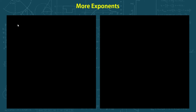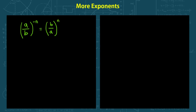Now let's go into some more advanced exponent rules. The first rule says that a fraction a over b, raised to the power of negative n, is equal to the flipped fraction b over a, with the exponent becoming positive. That's a neat trick to use when you're solving sums.